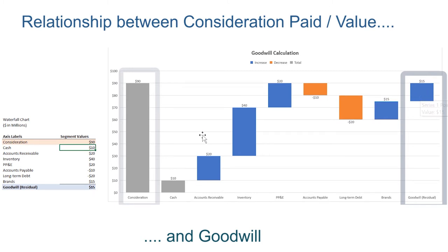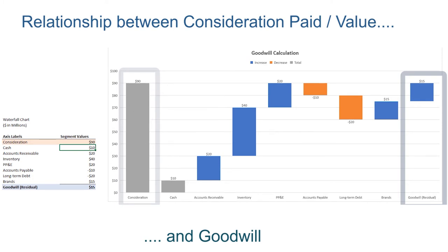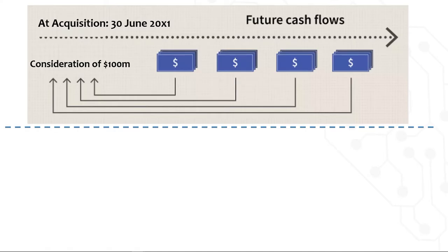As you can see, there is a clear relationship between consideration paid — or the value of the business — and the amount of Goodwill, which is the residual. The $100 million of consideration paid by Heinz at the time of acquisition was based on the future cash flows that Heinz expects to generate from Kraft.